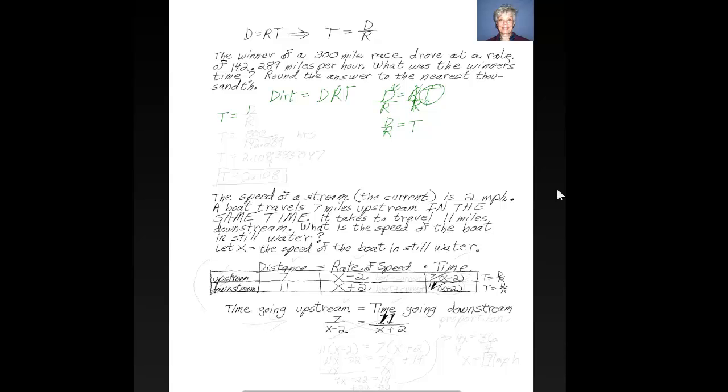If time equals distance divided by rate, then all I have to do is say time equals the 300-mile race, so it's 300 miles all together, divided by the rate of speed of 142.289, and that will give me the hours. Now I'm going to put that in the graphing calculator, or we don't need a graphing calculator. Any scientific calculator will do, 300 divided by 142.289, enter.